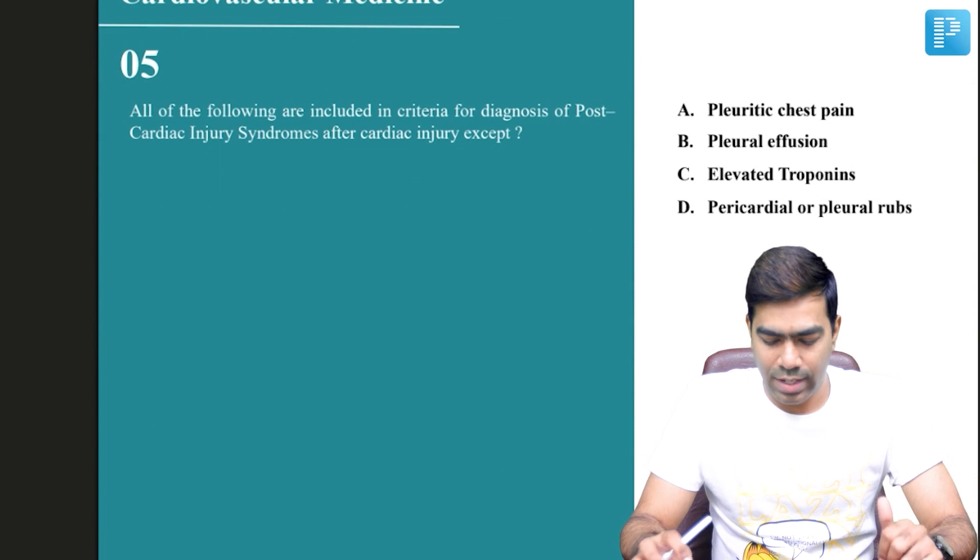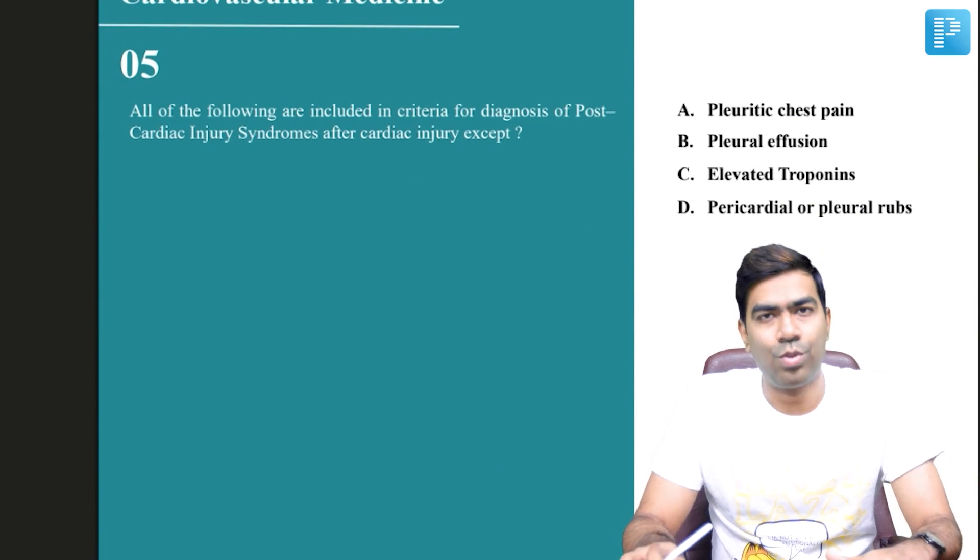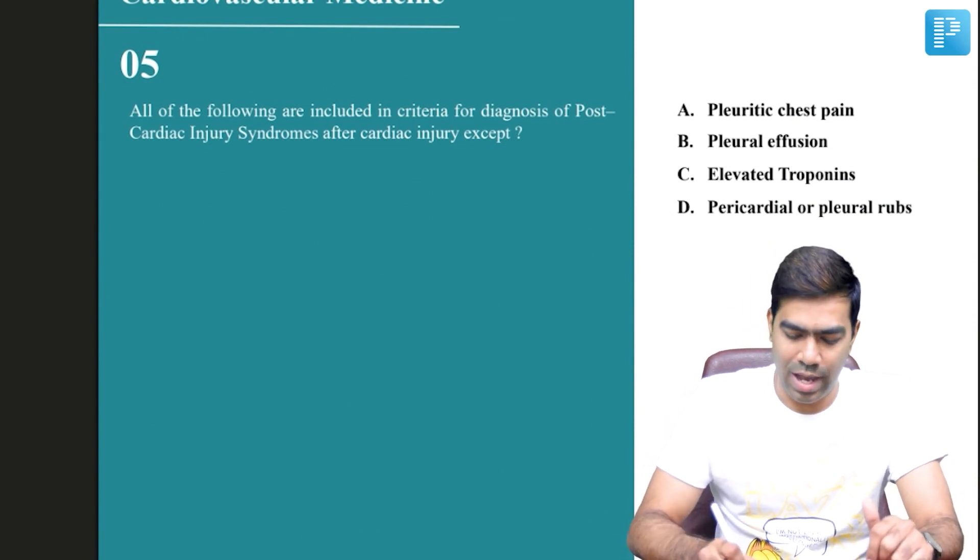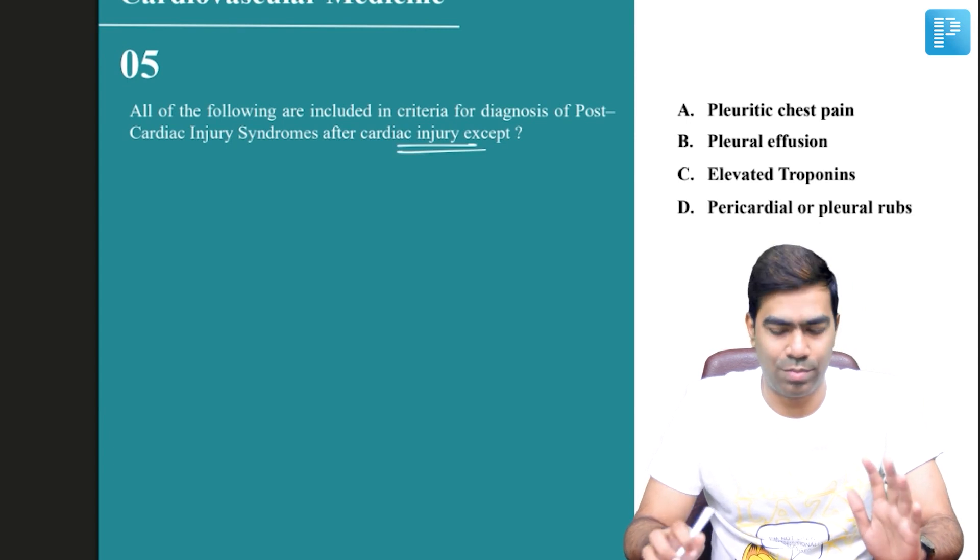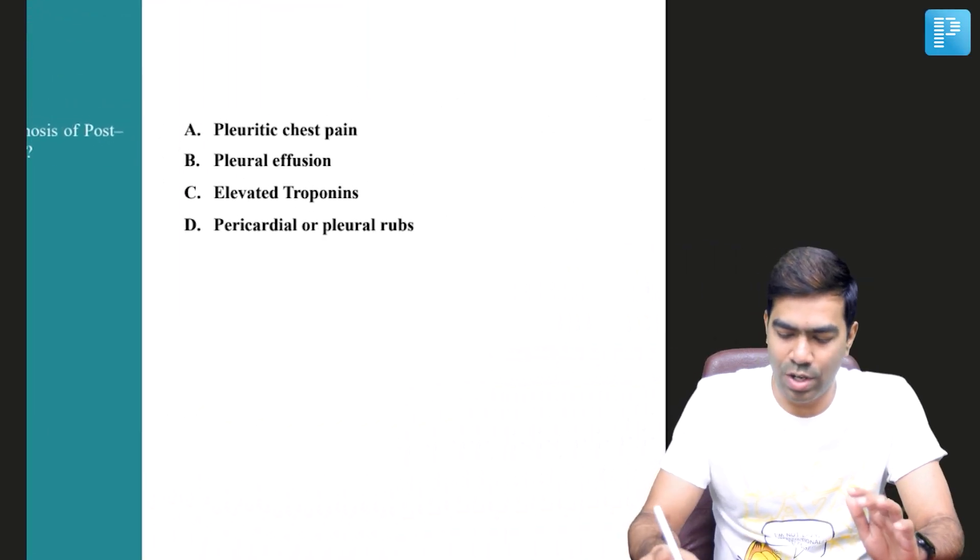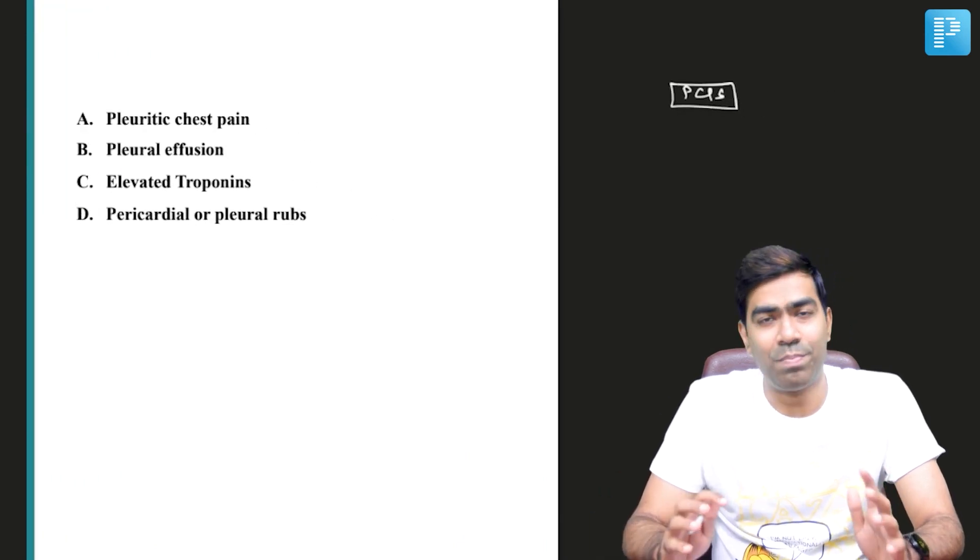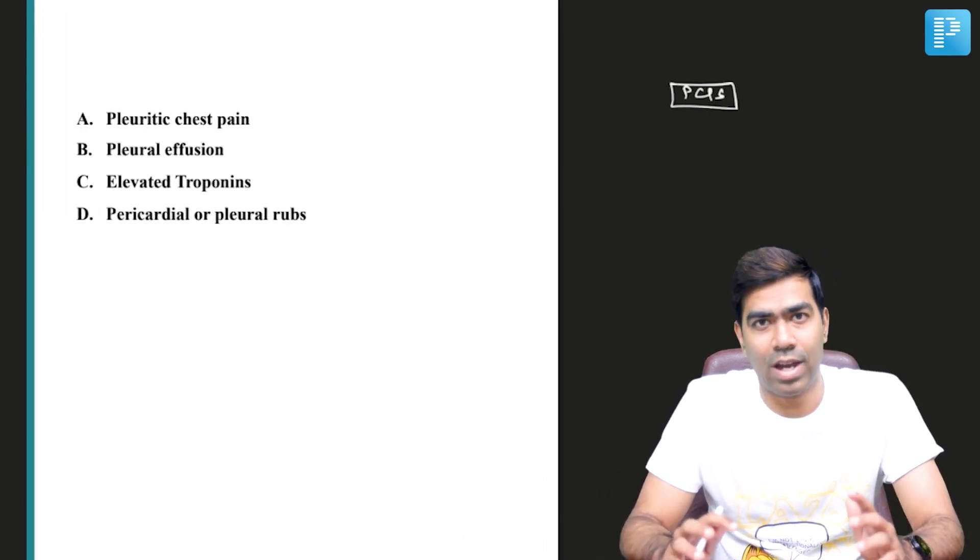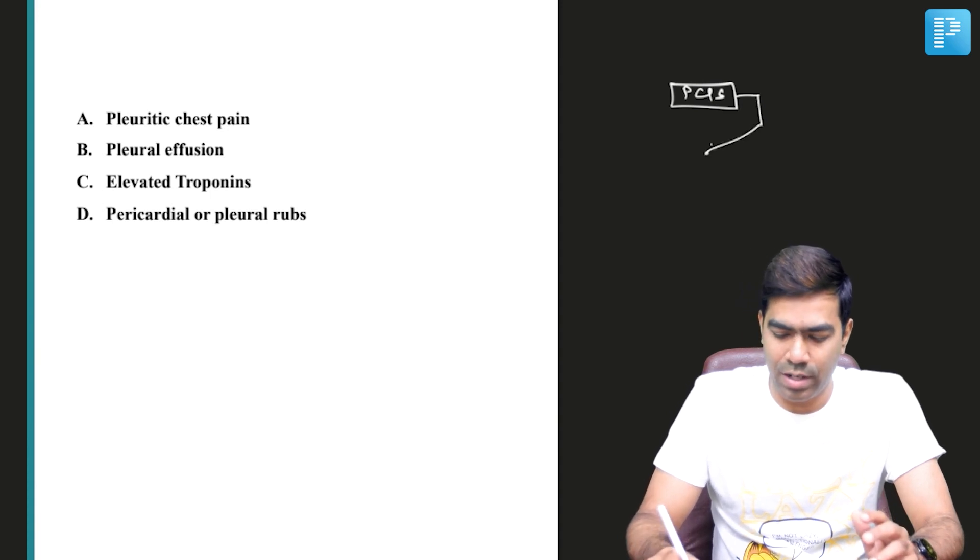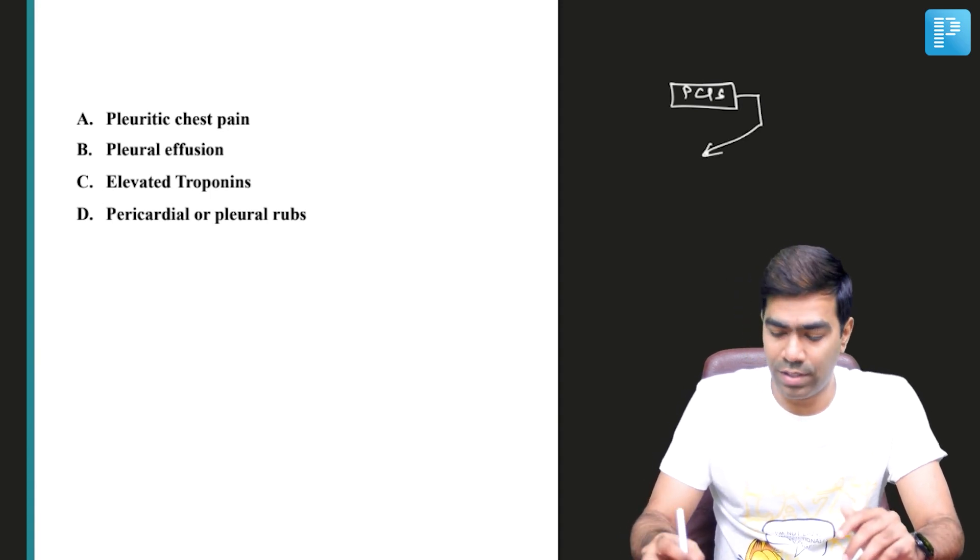All of the following are included in criteria for diagnosis of post cardiac injury syndromes after cardiac injury, except. First of all, you need to know what do you mean by the term post cardiac injury syndrome. This is a kind of a pericardial injury syndrome, and it's of three types according to the ESC guidelines.